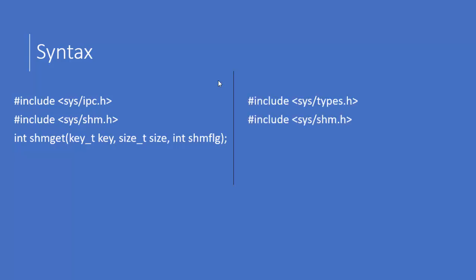Now let us move to the second function, shmat. One of the header files is the same sys/shm.h and another is sys/types.h. shmat also takes three parameters. The first parameter is an integer type variable — it is the value returned by the shmget function. The second parameter is the address where to attach the shared segment to the calling process — to which point in the address space of the calling process, either sender or receiver, the shared segment should be attached.